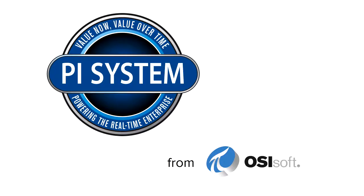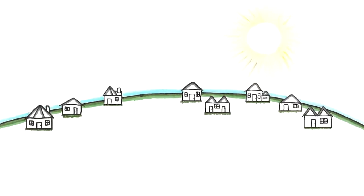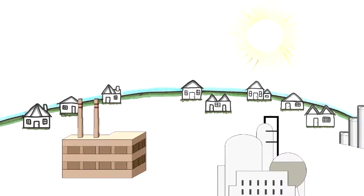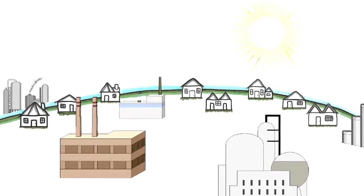It's called the Pi system, and for 35 years, in industry after industry, it's been considered a critical infrastructure for improving operations.